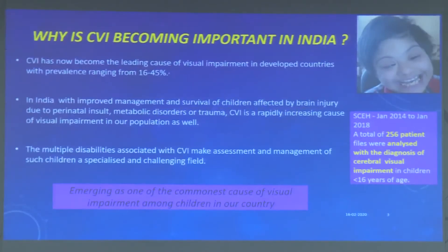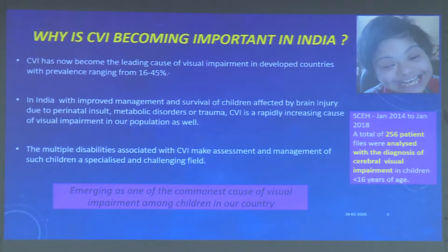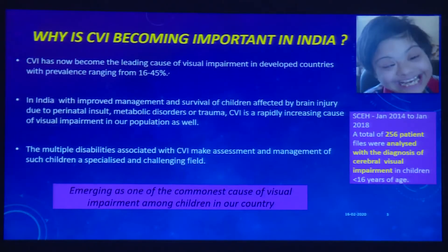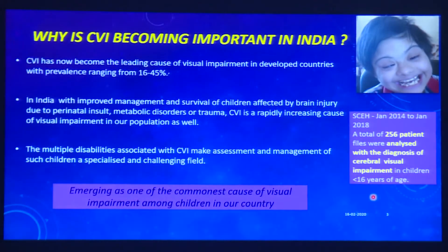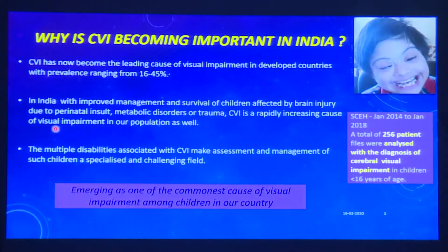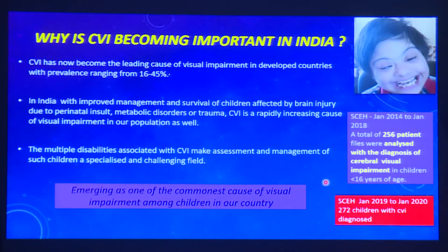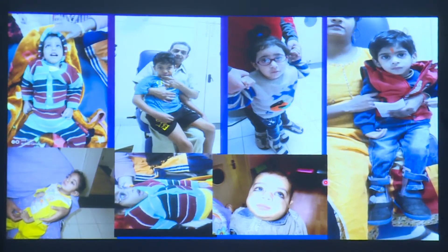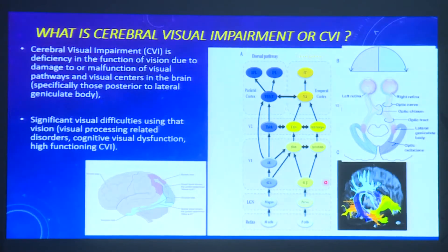I will be speaking on why CVI is becoming so important in India. With improved management and survival of children affected by brain injury due to perinatal insult, metabolic disorders or trauma, it is becoming the cause of visual impairment in our population. In the last four years we saw around 256 patients, and now in just one year we have seen around 272 children with CVI. This is now becoming one of the most common causes of visual impairment, and most of these children are being referred so late.